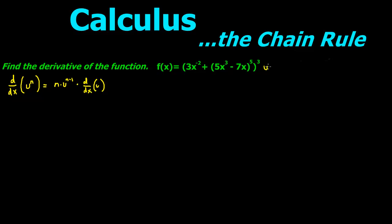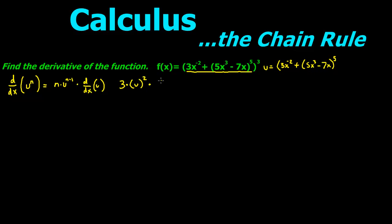For this we're going to assign u. U is going to be the inside of these brackets, so u is going to equal 3x to the negative 2 plus 5x to the third minus 7x, all to the fifth power. So the first part is we take n times u, where n is 3, so we say 3 times u to the n minus 1, which is 2.